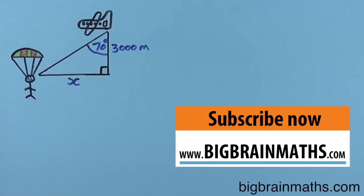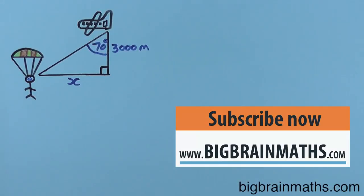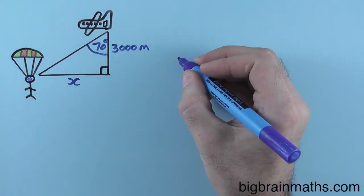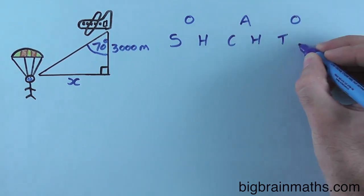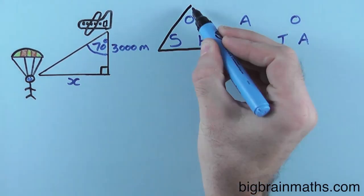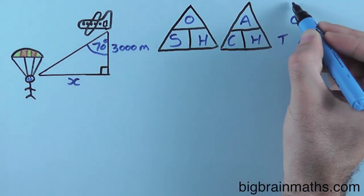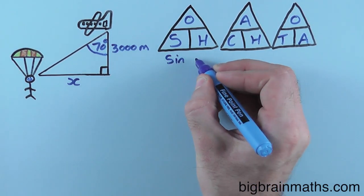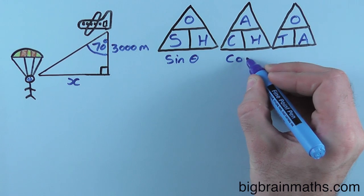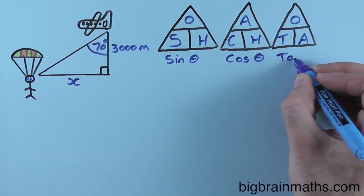Before starting any trigonometry problem, write out the word SOHCAHTOA exactly like this: S-O-H-C-A-H-T-O-A. Then draw three formula triangles around the word SOHCAHTOA. Remember, S stands for sine theta, C stands for cos theta, and T stands for tan theta.